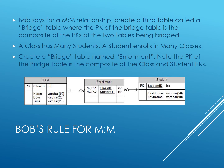In Bob's Rule of a many-to-many relationship, we create a third table called a bridge table. The primary key of the bridge table is the composite of the primary keys of the bridged tables. In our student-class example, the bridge table is named enrollment. The primary key of the enrollment table is the composite of the primary keys of the class and student tables — class ID and student ID.